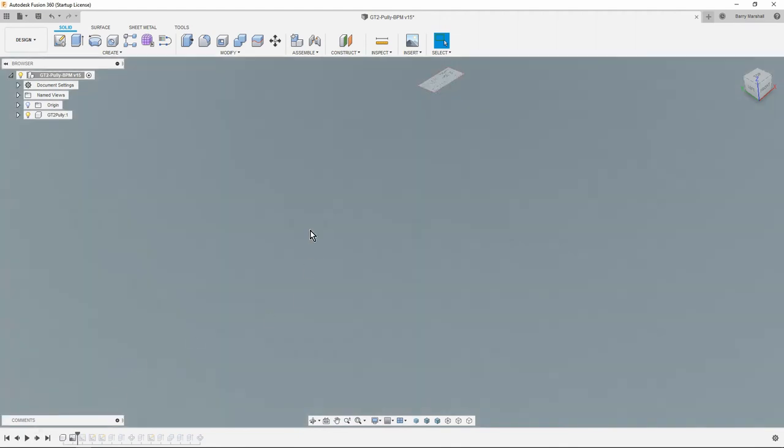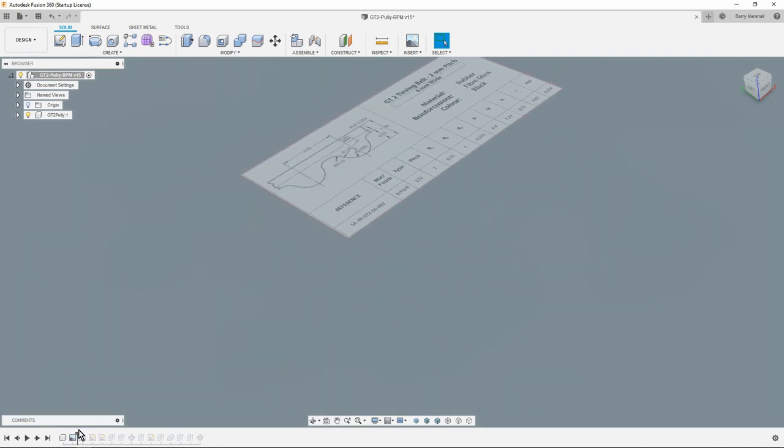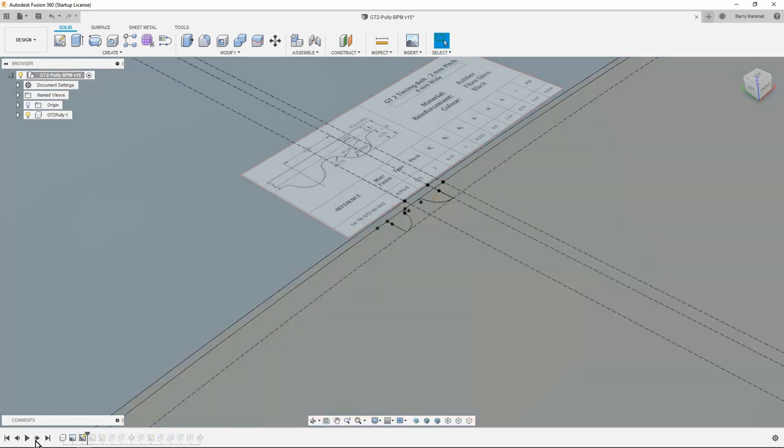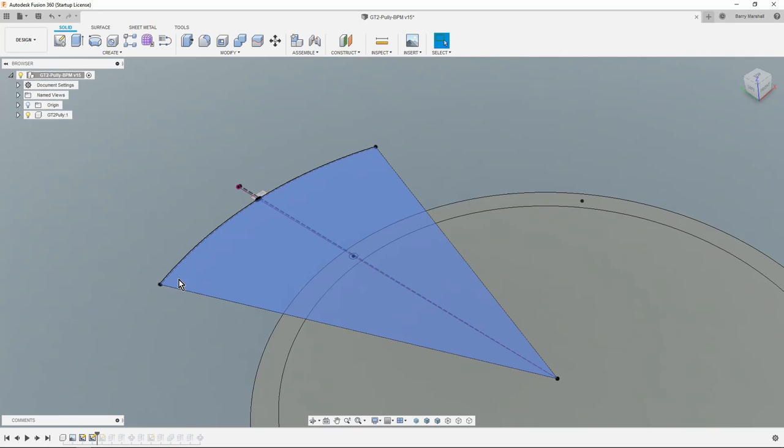Here we are, this is the Fusion CAD. If you've seen my other video I go through how I create the tooth profile, so have a look at that if you want to see more. We've got that tooth profile in there, the bearing, and just basically some geometry.